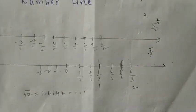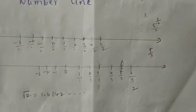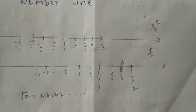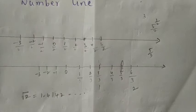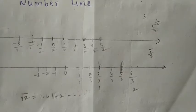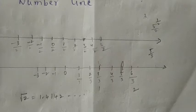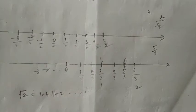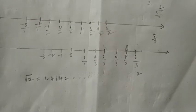But how do we represent root 2? Root 2 is 1.4142... This is non-terminating and non-recurring. How will we represent it on the number line? In this lesson, let us see the procedure for representation of irrational numbers on the number line.